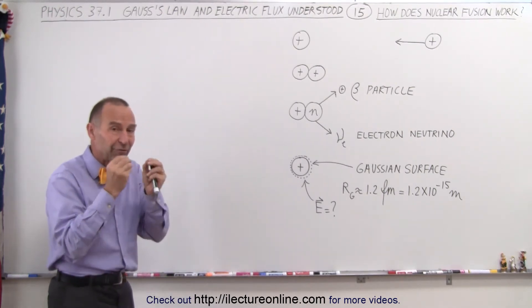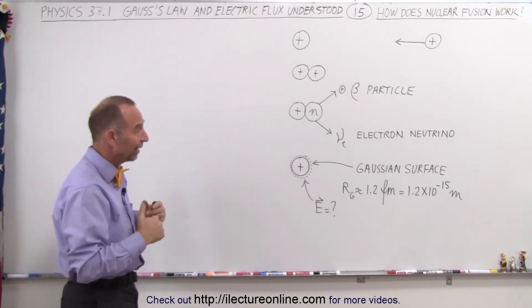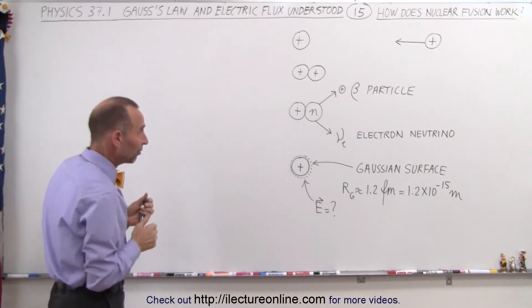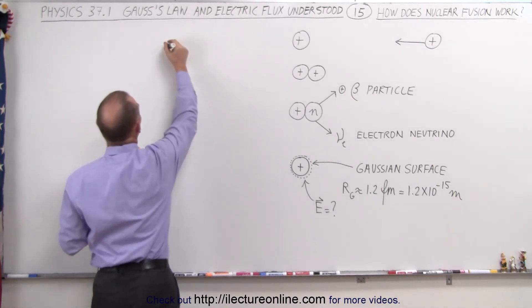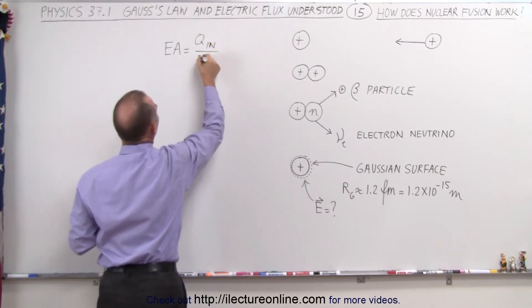And then we're going to calculate the force that will exist between two protons at that small distance, and from that point we'll see why the protons have to travel so fast before nuclear fusion can occur.